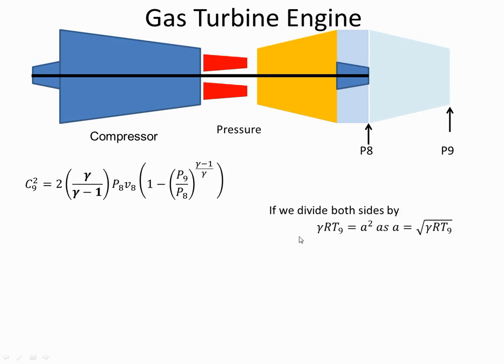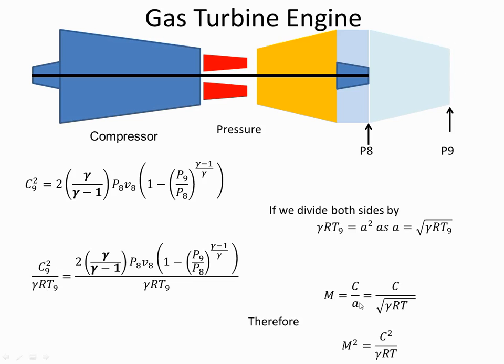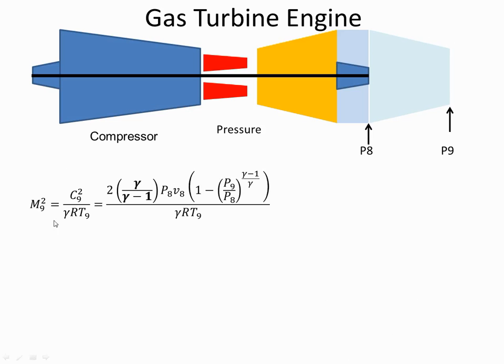And if I divide both sides by gamma RT9. Now gamma RT is the speed of sound squared as the speed of sound is equal to gamma RT. So the speed of sound at this point here. So divide both sides by that. I get this expression. But velocity over the speed of sound is really the Mach number. Because Mach is velocity over the speed of sound. So the Mach number squared is the velocity squared over the speed of sound squared. Which is this. So I can say the Mach number is equal to all of these.